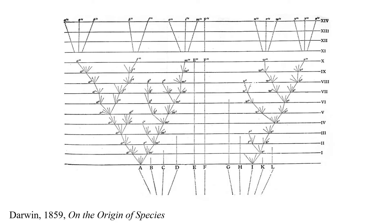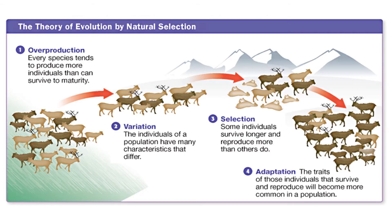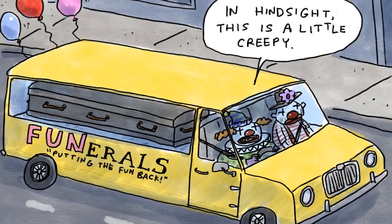Importantly, Darwin's work argued for the common ancestry of all life, establishing that organisms evolve and change over time as new species originate from modification of old ones. Natural selection relies on four concepts. First, each species produces more individuals than can survive to maturity. Resources are limited, and some individuals do not survive long enough to produce offspring.